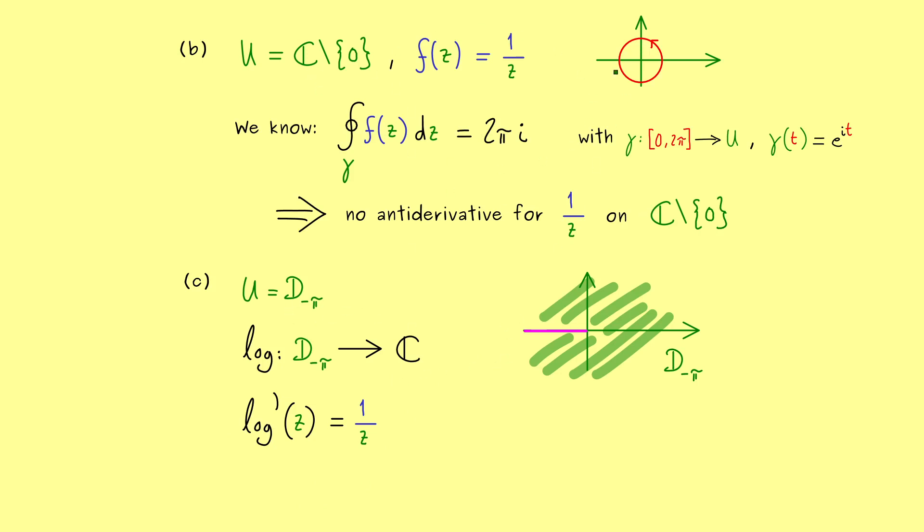In particular such a curve as this one is not possible anymore. In other words we cannot enclose 0 with the curve. Still for all closed curves like this one we get the same result as before. Namely that the contour integral is equal to 0.